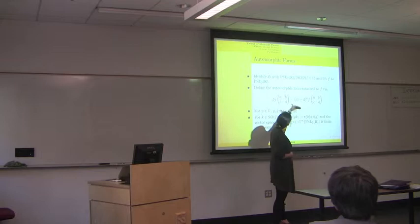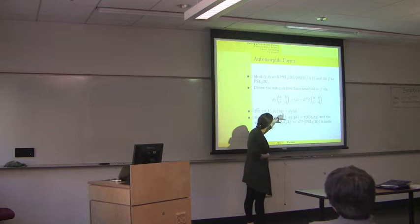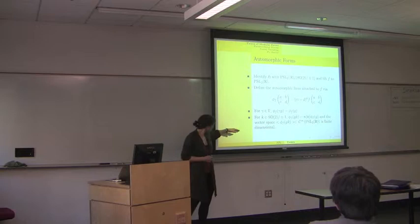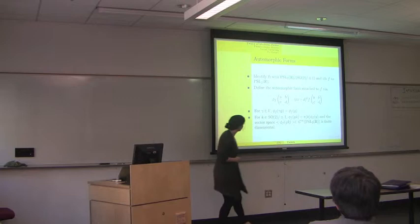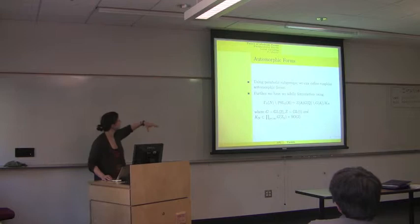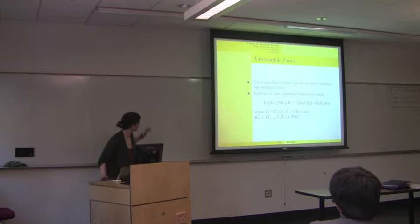Instead of having a function that transforms almost invariantly under the modular group, I'm going to define a function that's invariant under the action of Γ₀(N). This space of all such functions is going to be a piece of L², and using parabolic subgroups we can define automorphic forms.